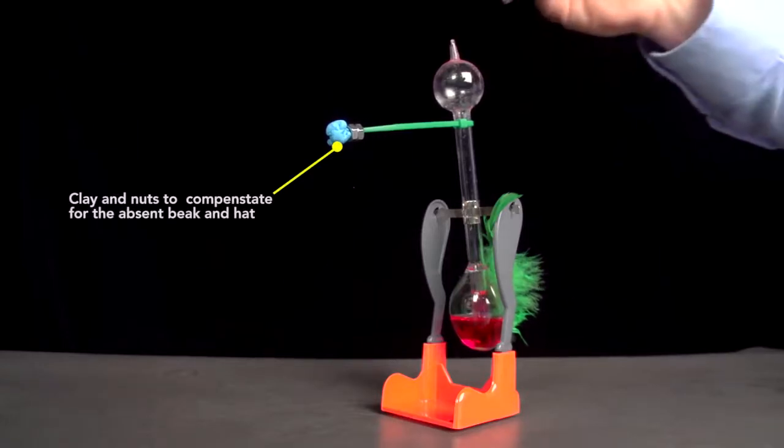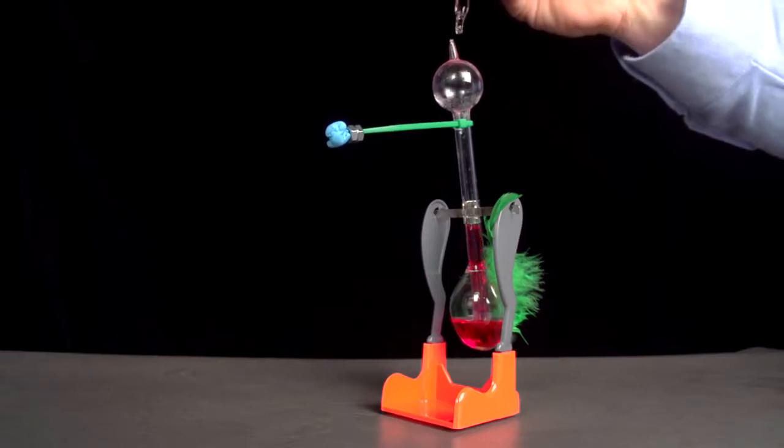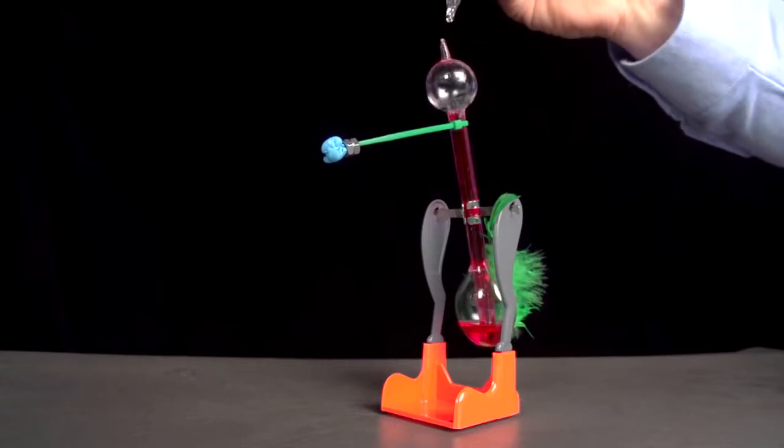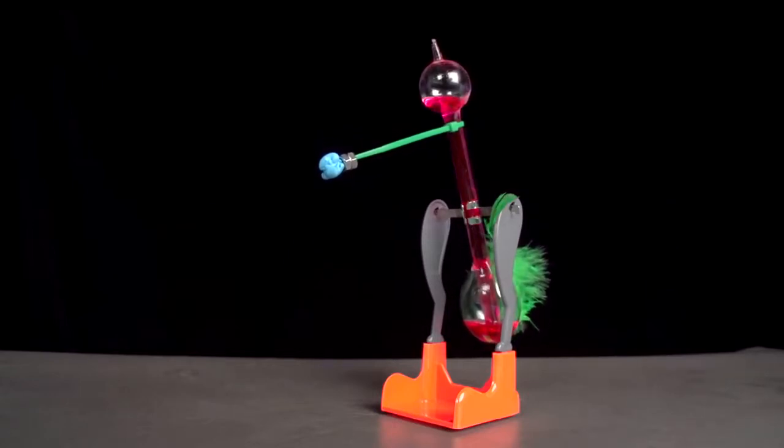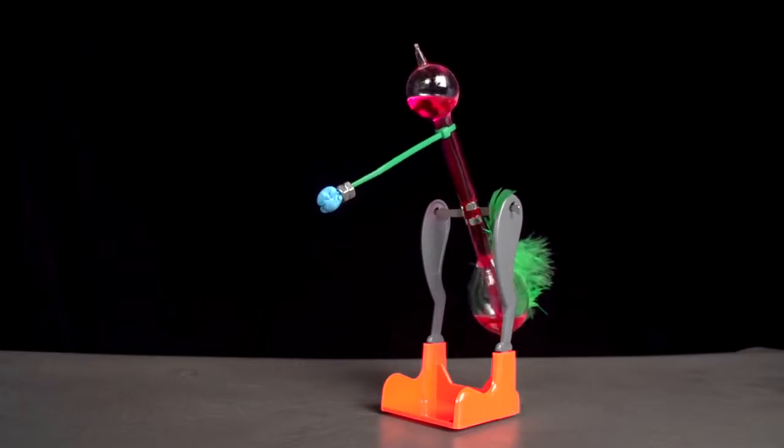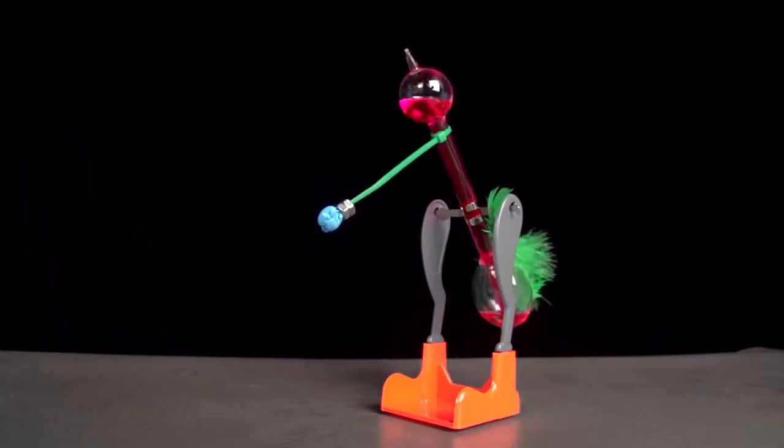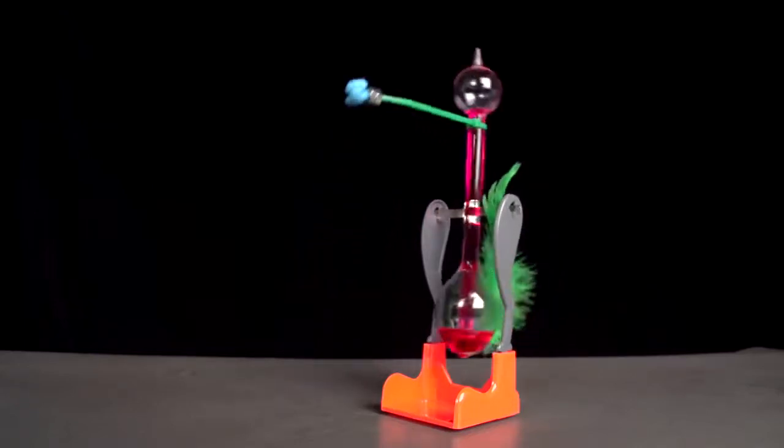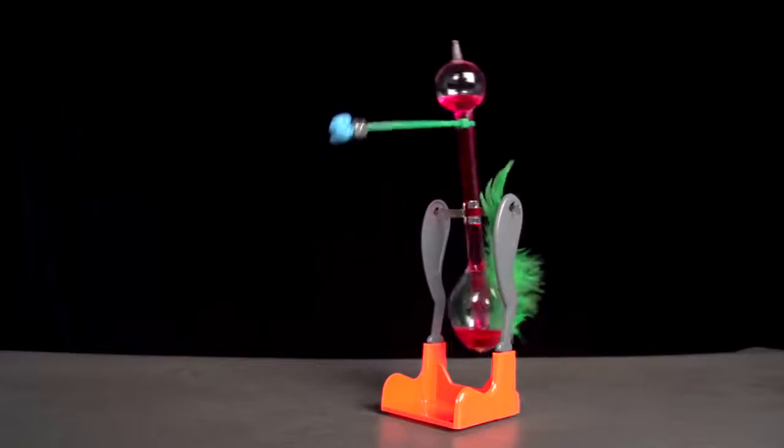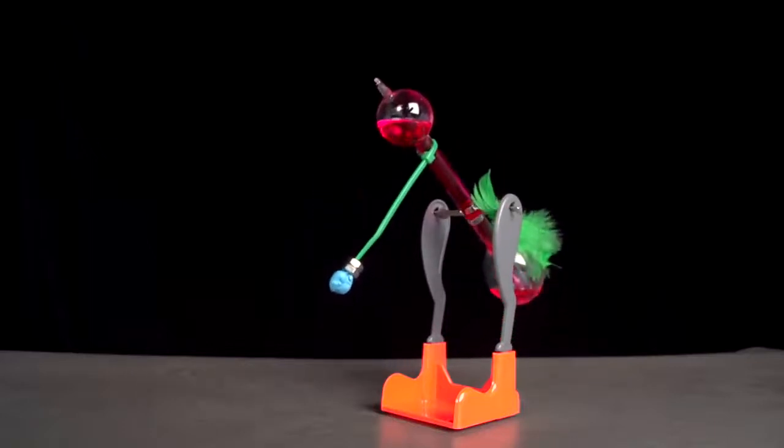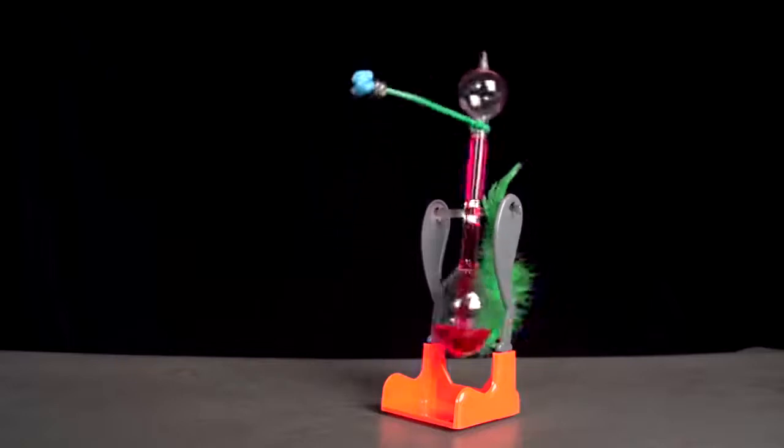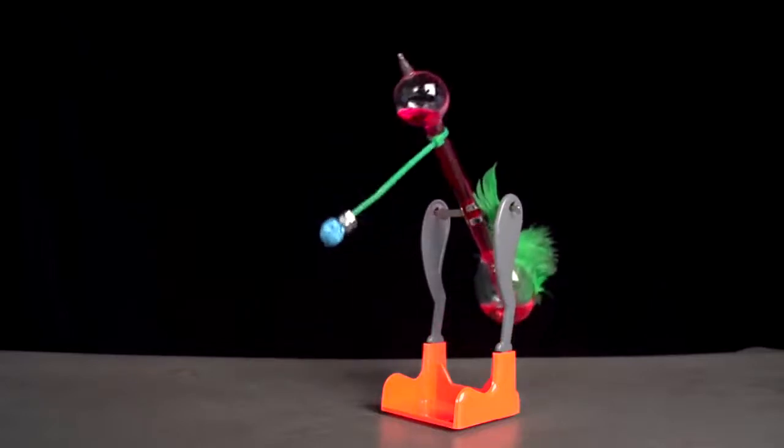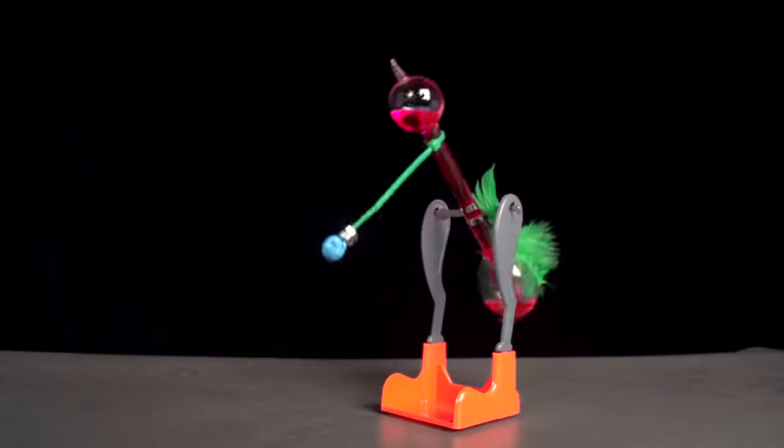Now watch as I put a few drops of isopropyl alcohol on the top bulb to cool it. The liquid rapidly rises to the head. This changes the bird's center of gravity so that it will tilt forward. The head now fills with liquid and then it drinks. It becomes upright and the liquid drains from the head. Liquid rises again to the head and the bird drinks again. This cycle repeats until all of the isopropyl alcohol on the bird's head evaporates.